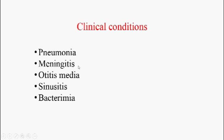In meningitis cases, symptoms include fever, headache, and vomiting. The patients will have prostration — they always want to bend. They will have Babinski sign, photophobia, and phonophobia. In otitis media, the symptoms include fever, headache, earache, and pus formation. Sometimes we can also see draining of pus from the ear. In sinusitis, we can see fever and headache. In bacteremia, depending upon the patient, organisms are present inside the bloodstream and symptoms include fever, malaise, myalgia, and headache.